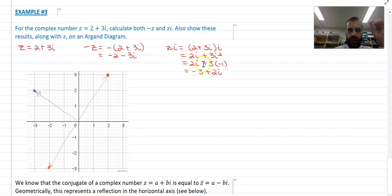Multiply by i, the real becomes imaginary, the imaginary becomes real, and we rotate 90 degrees anticlockwise on our Argand diagram.